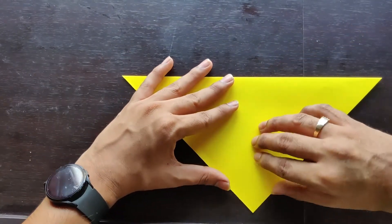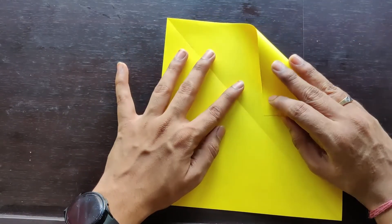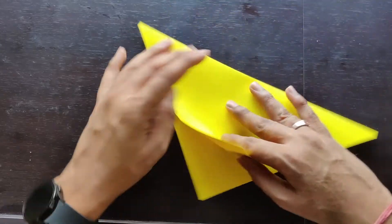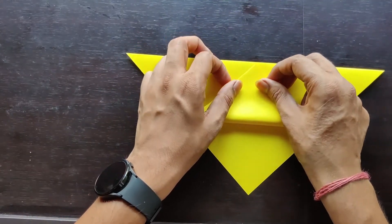Then we'll fold this portion, the step till here, till the half. Or what we can do is just use this side and then we'll fold it like this.